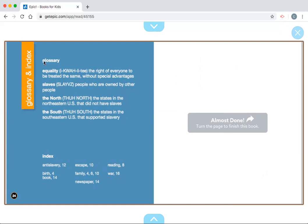Let's go over the glossary here. So some books, scholars, some books have a glossary, which is just a page that has the definitions of words, what some of the words mean. So we did see the word equality in this biography. The word equality means the right of everyone to be treated the same without special advantages. That's what the word equality means. You also saw the word slaves. Slaves are people who are owned by other people.